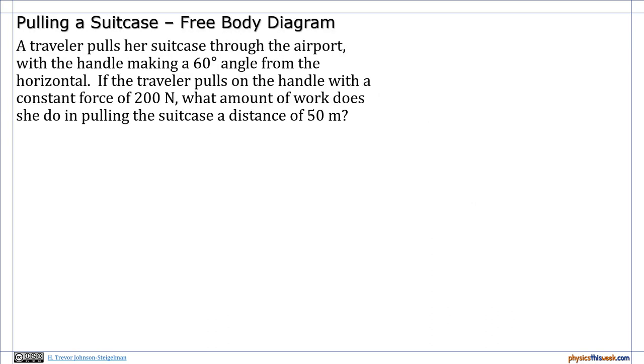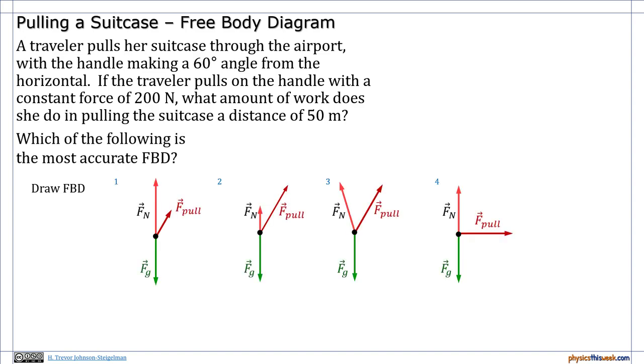Let's do an example. Suppose that we have a traveler pulling a suitcase through the airport with the handle making a 60 degree angle from the horizontal. If the traveler pulls on that handle with a constant force of 200 newtons, what amount of work does she do in pulling that suitcase for 50 meters? We're going to draw the free body diagram. But before we actually do the problem, I'd like you to think for a second. Which of these four options is the best free body diagram? Pause the video if you can, hang out for a second, think about it, and then we'll come back.